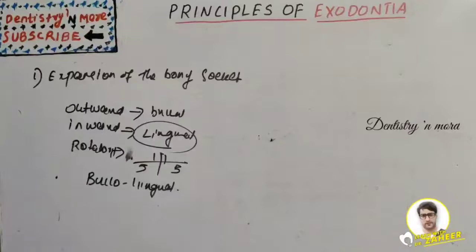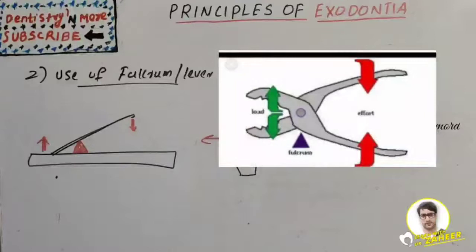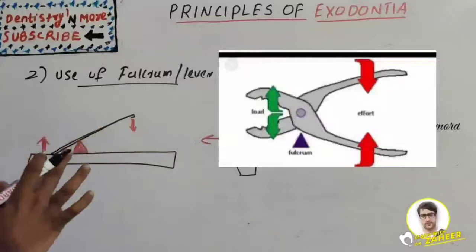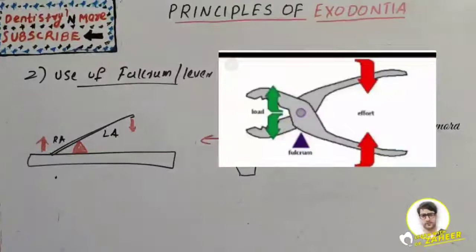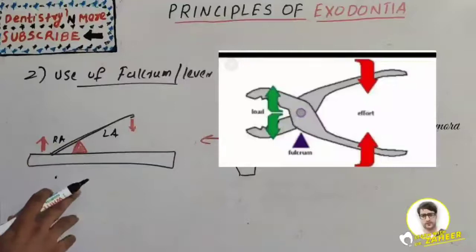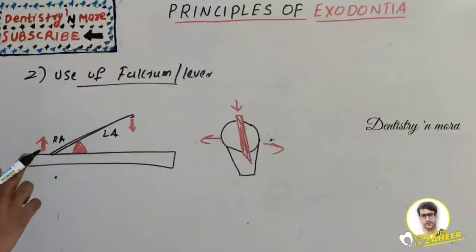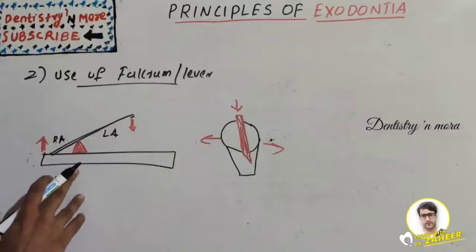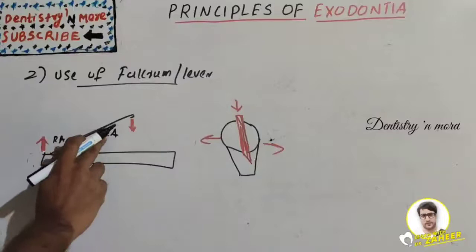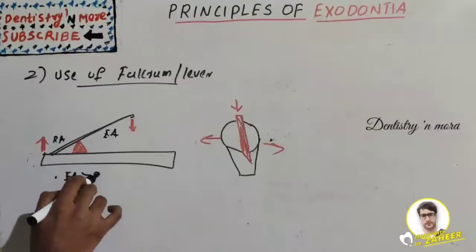The basic principles of tooth extraction include the fulcrum or lever principle. A lever is a mechanism for transmitting a modest force with a mechanical advantage — this is the basis of elevator use. To obtain maximum mechanical advantage, the fulcrum should be near the point of resistance, and the effort arm should be longer than the resistance arm. This is the principle of the class one lever.